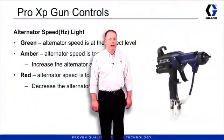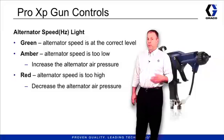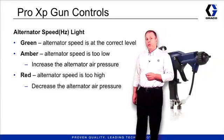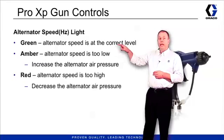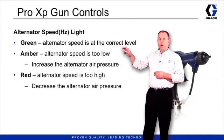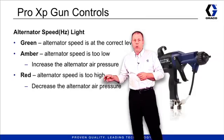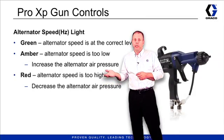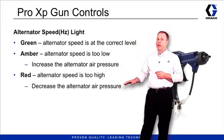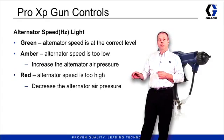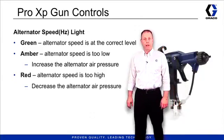The Pro XP gun has an alternator speed light on it. The speed light's doing two things. Number one, it's telling you the electrostatics are on, but it's also giving you a visualization if it's running properly. The light's going to be green if it's running at the right rotational speed. It'll be amber if it's running a little bit too slow and you need to increase the pressure to the gun. Red indicates that it's running too fast and you need to back off the pressure so it's running at the right speed to create the right voltage output on the gun.